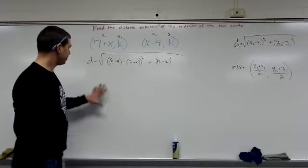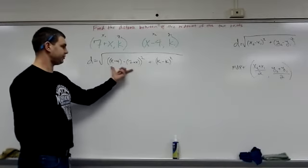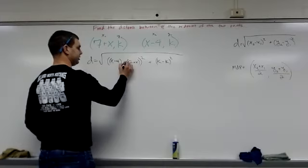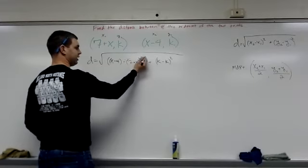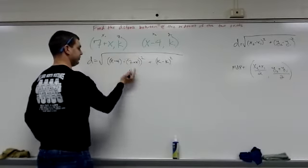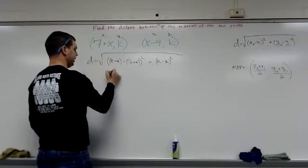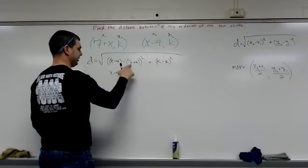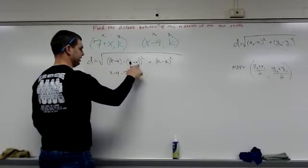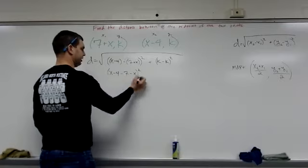Okay, so if we kind of simplify this first part especially, what we're going to see is we have to distribute this negative. Notice this square is on the outside of all those parentheses, so we have to do inside first, and that leaves you with x minus 4, minus 7, and then negative x, and that's all squared.